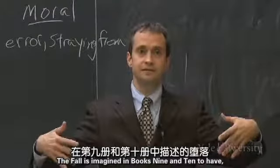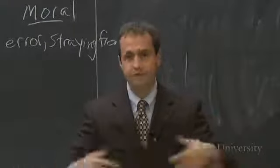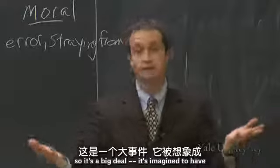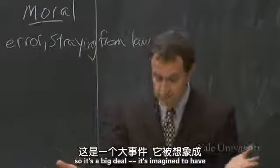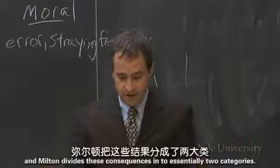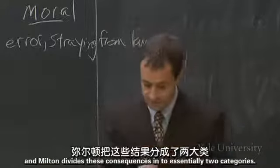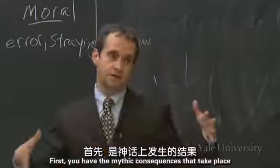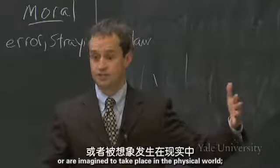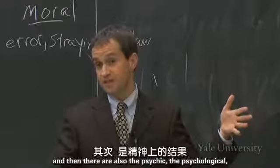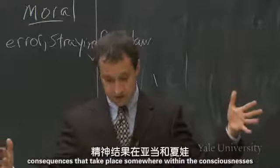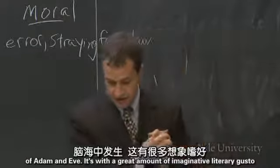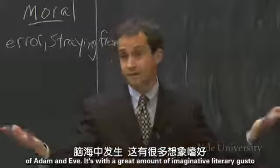The fall is imagined in Books 9 and 10 — this is the event heralded in the title, so it's a big deal — to have an enormous range of consequences. Milton divides these consequences into essentially two categories. First, you have the mythic consequences that take place in the physical world. And then there are the psychic, the psychological consequences that take place somewhere within the consciousnesses of Adam and Eve.